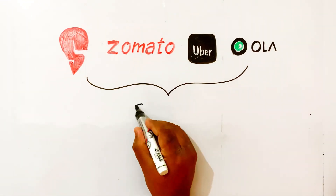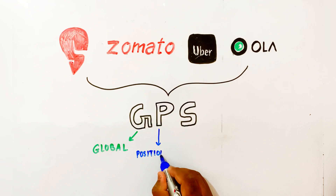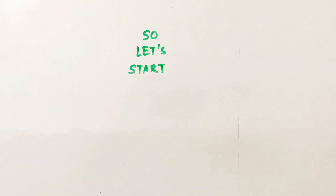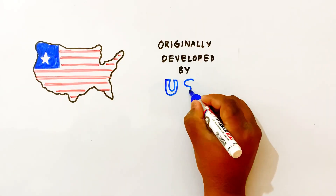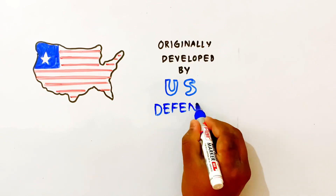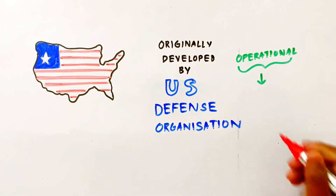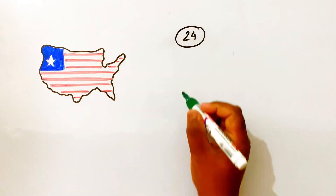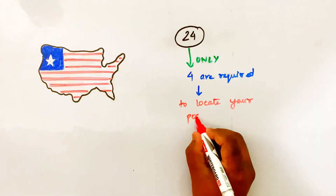This is GPS — it means Global Positioning System — and this is integrated into all our phones. Originally, this was developed by the US Defense Organization for defense safety. It became operational in 1995, and public users started using GPS. It uses 24 satellites. We use our receiver.